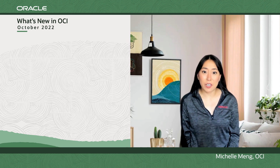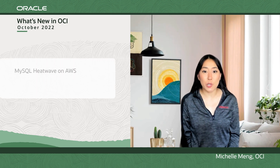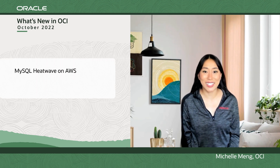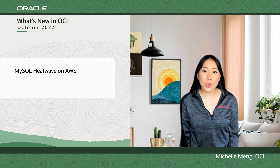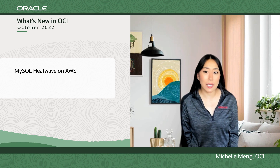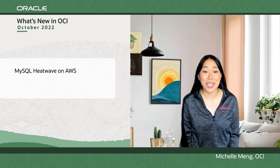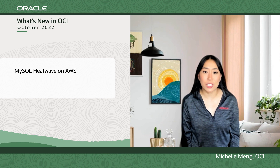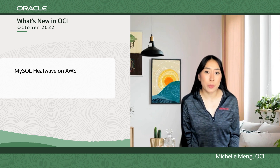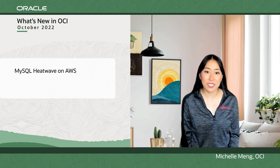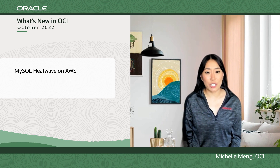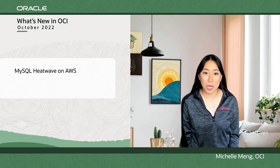The biggest buzz lately is the availability of MySQL HeatWave on AWS. MySQL HeatWave is Oracle's solution to running transactions, analytics, and machine learning on the same MySQL database, and now you have the option to take advantage even on AWS. No more ETL and duplication between Aurora and Redshift. This is really a game changer, so be sure to check out more in the link below.